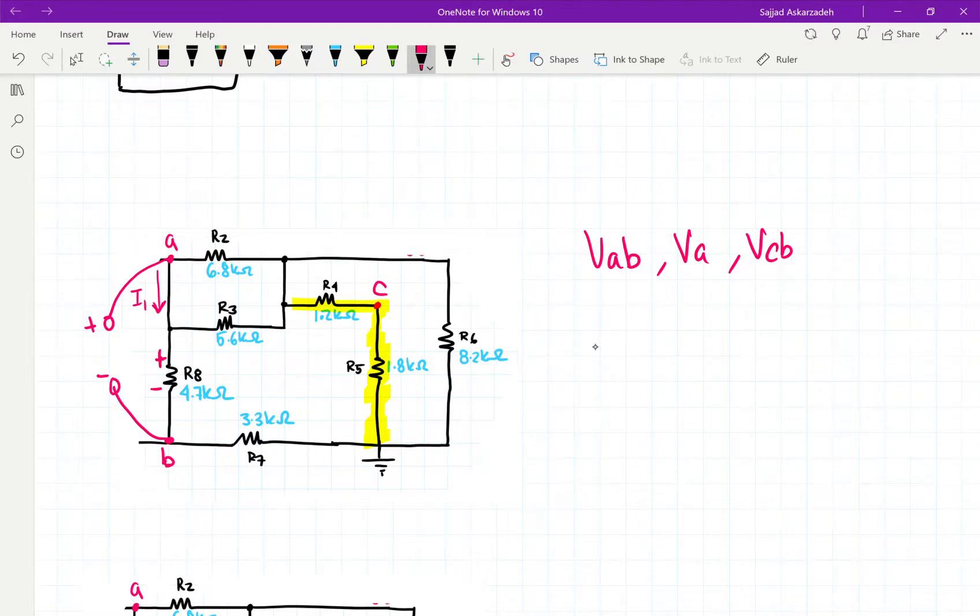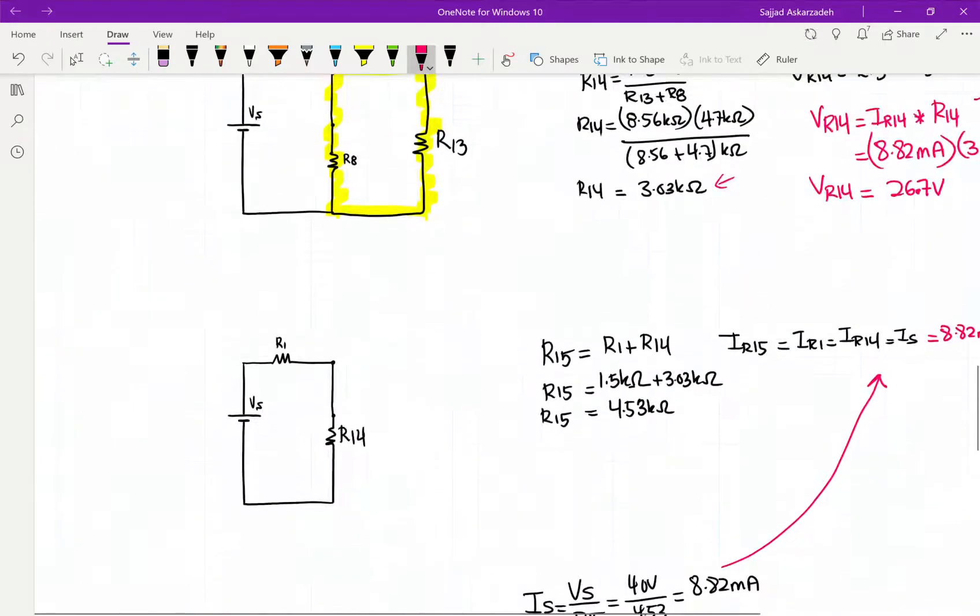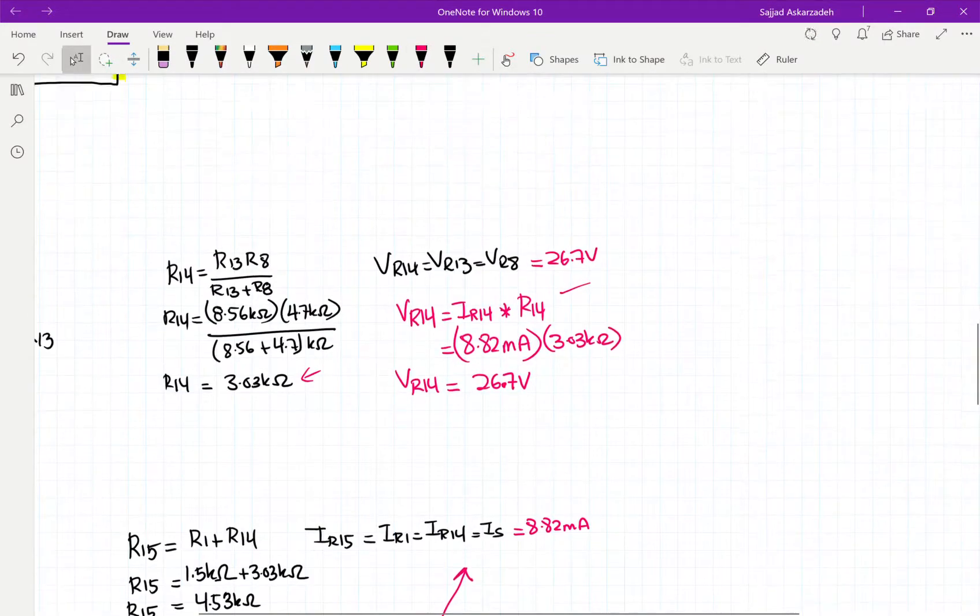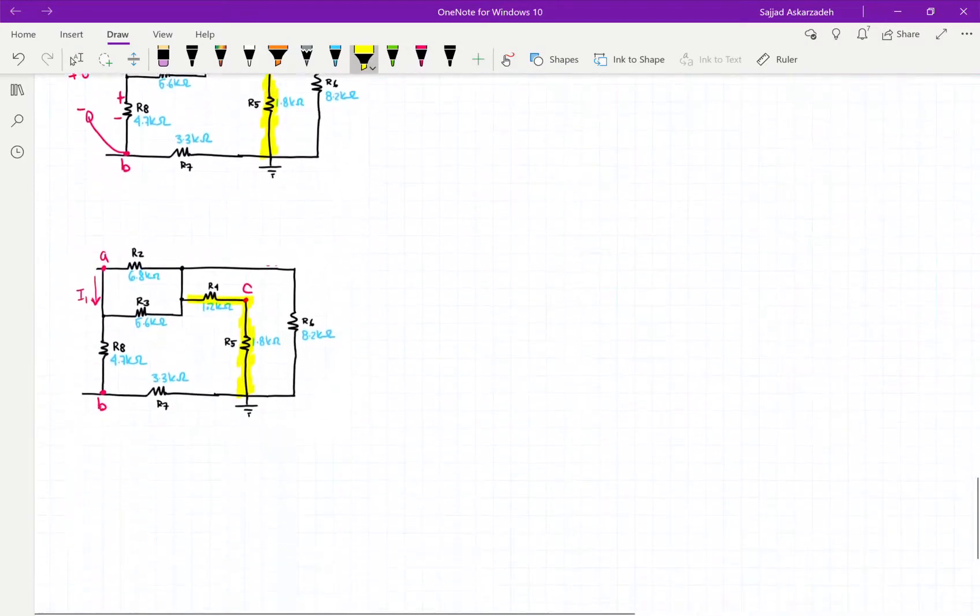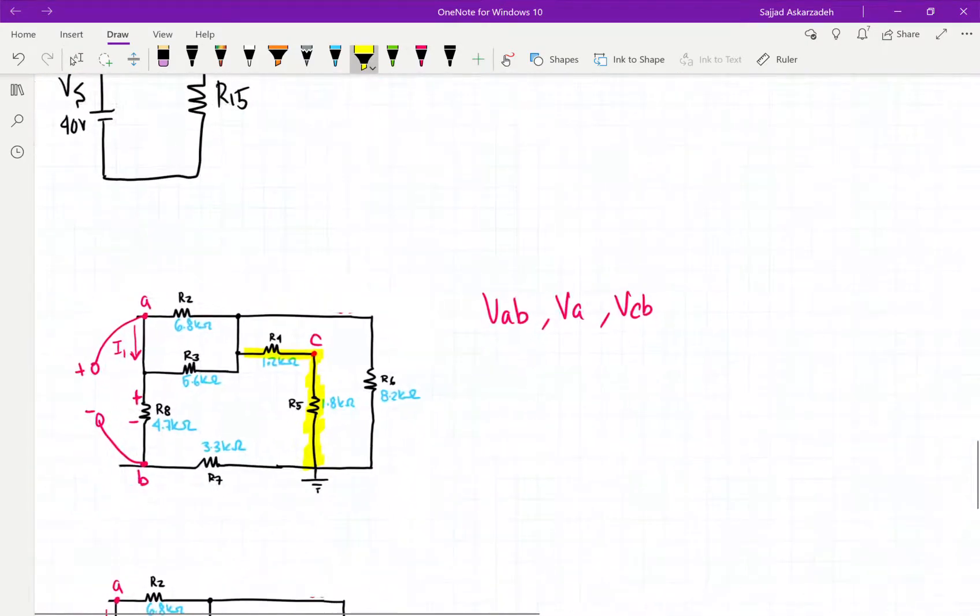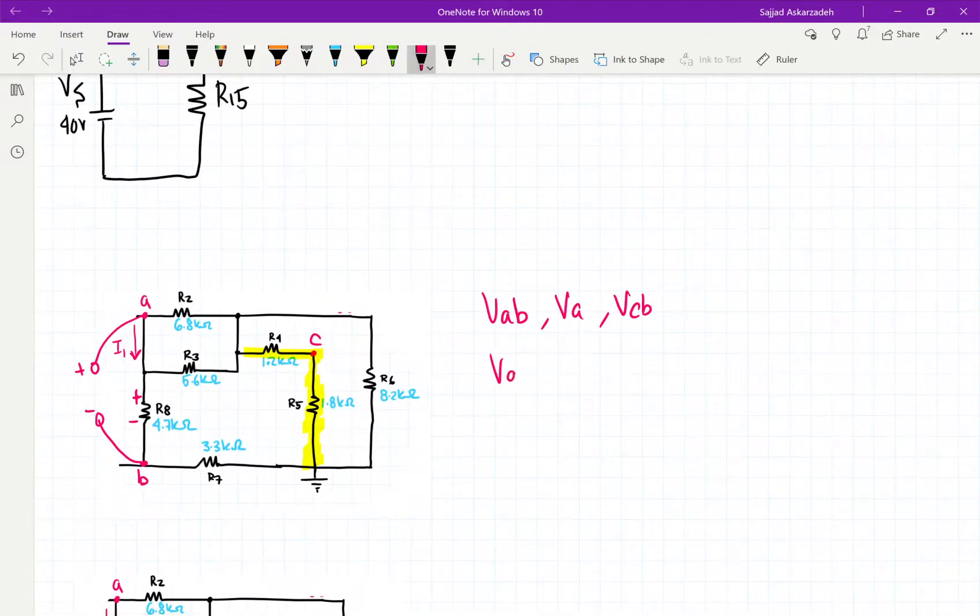And we know that we've calculated what VR8 is. And if we look up, VR8 is 26.7. So we can go ahead and write down that VAB is equal to 26.7.